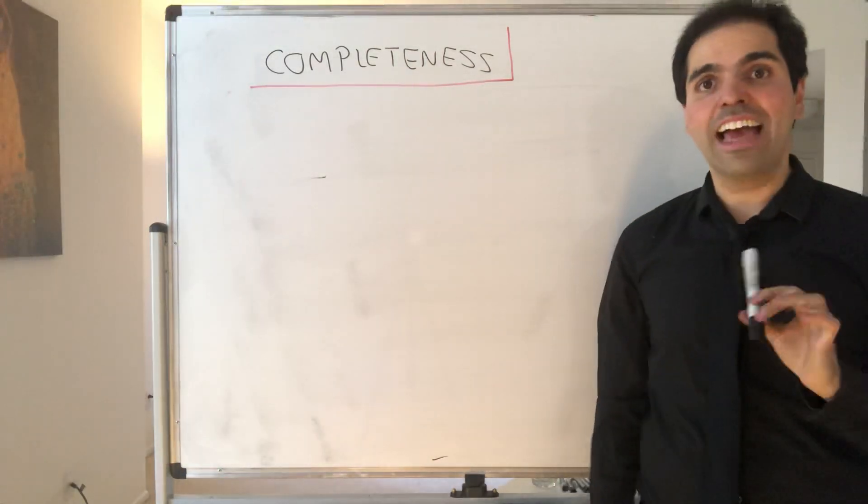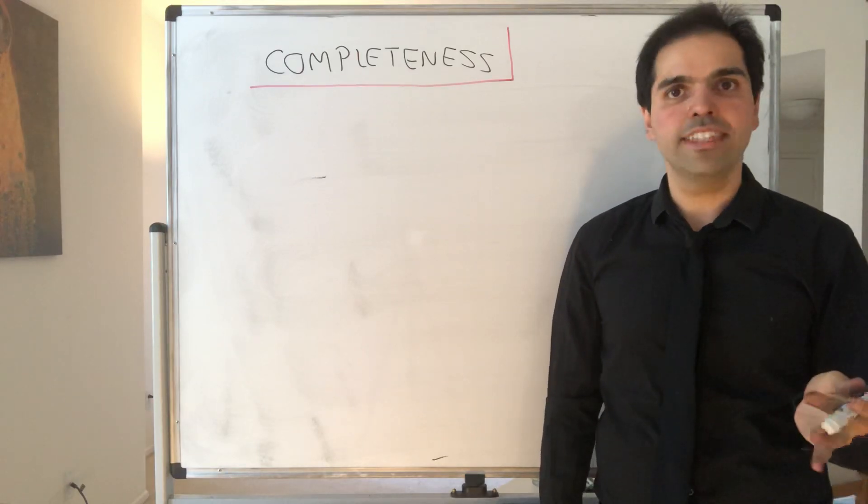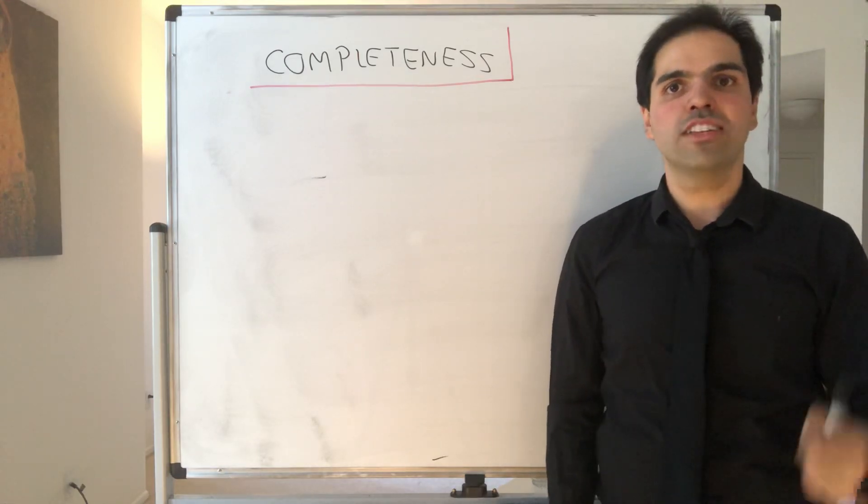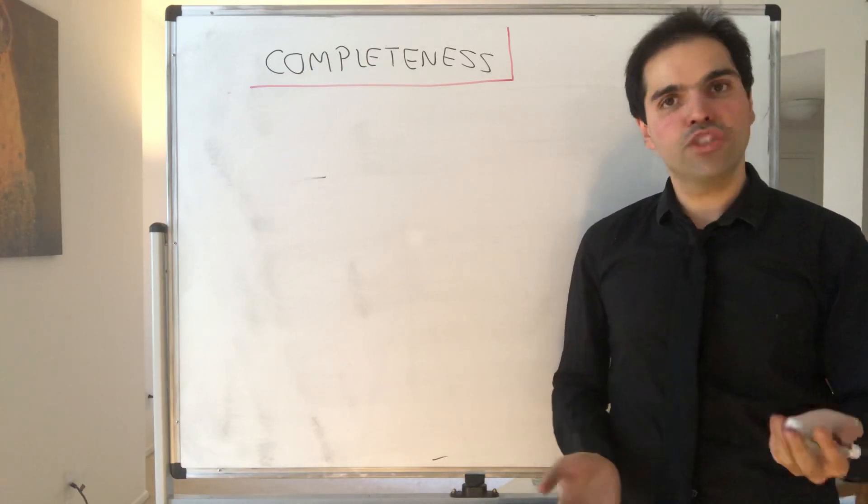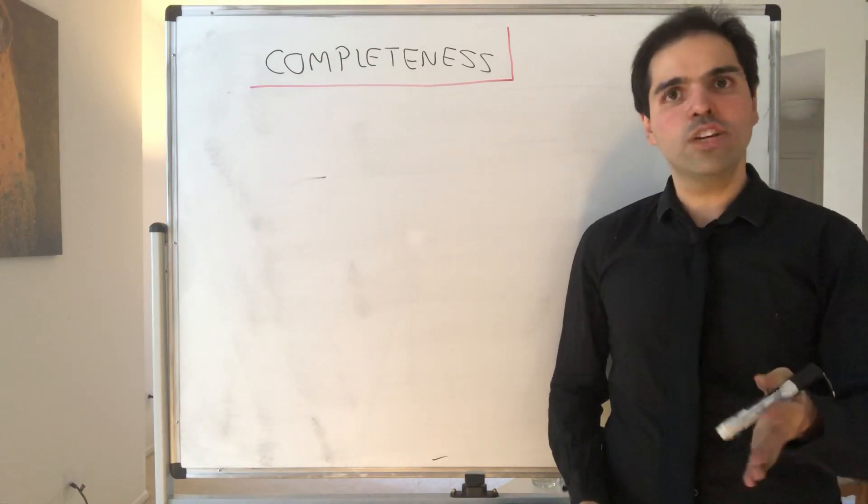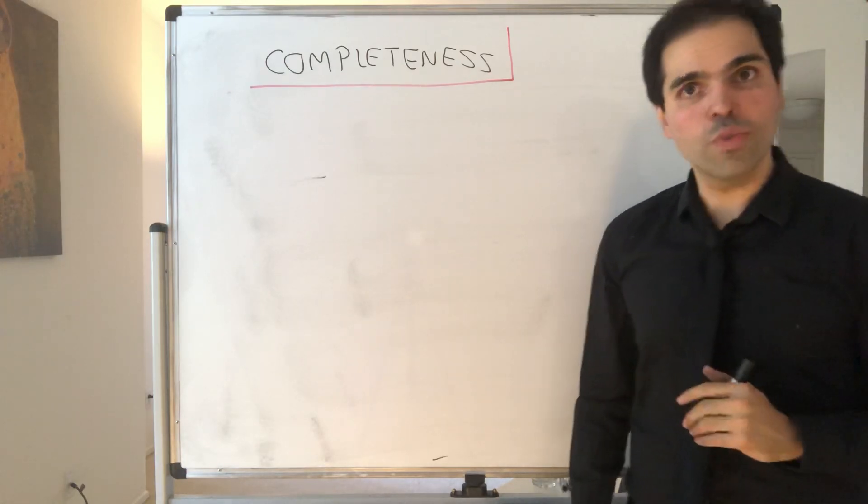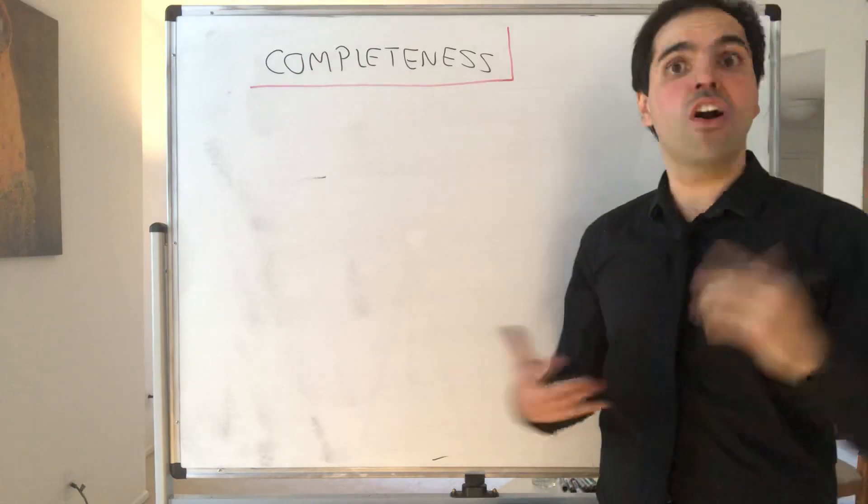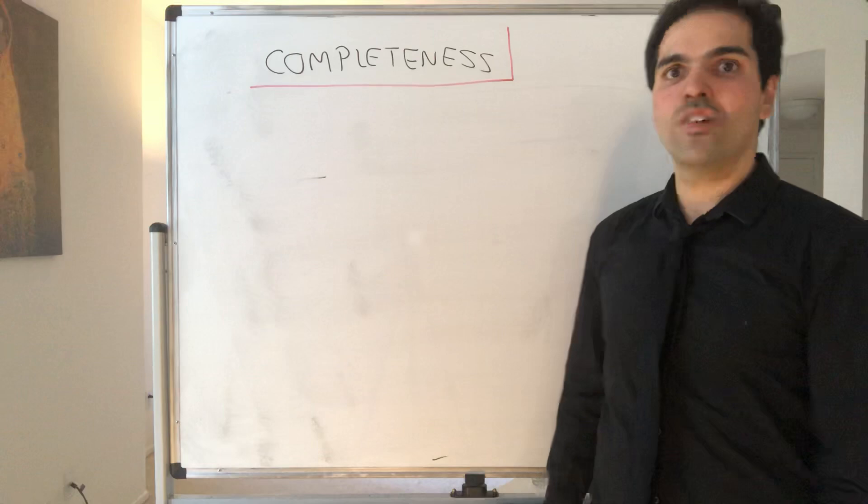All right, thanks for watching. In a previous video, I defined the notion of a Cauchy sequence, which are just sequences that get closer and closer to each other. I showed that if a sequence converges, then it is Cauchy, which of course raises the question: is the converse true? If a sequence is Cauchy, does it converge?